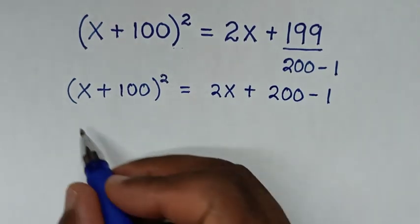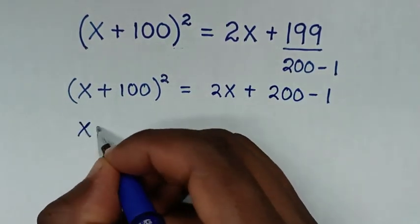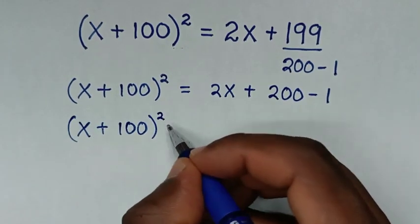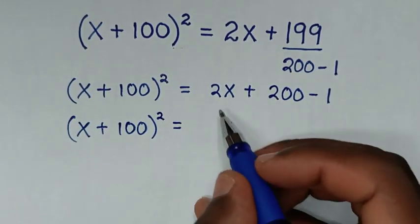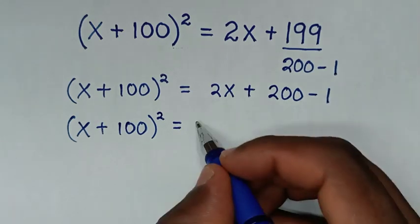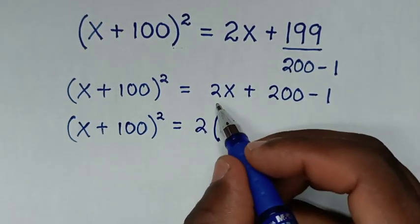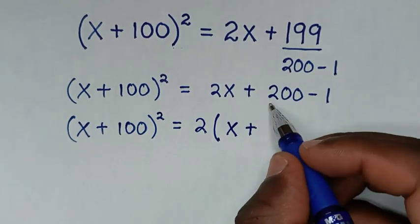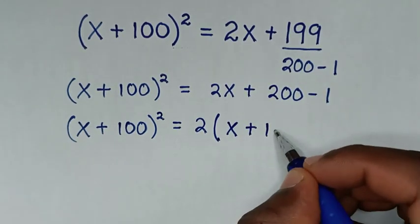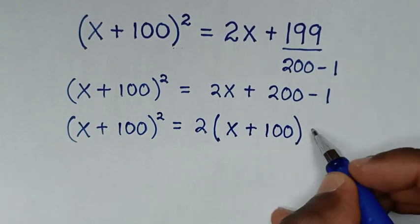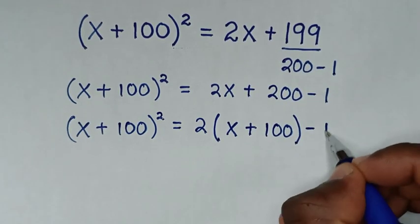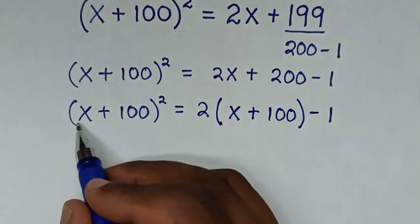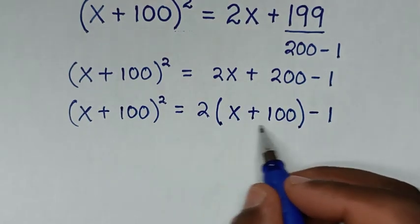In the next step, (x + 100)² = 2x + (200 - 1). Here 2 is common, so we take 2 out of the bracket: 2x divided by 2 is x, then plus 200 divided by 2 is 100, giving 2(x + 100) minus 1.